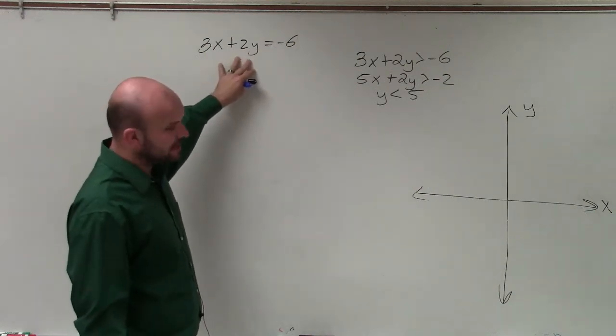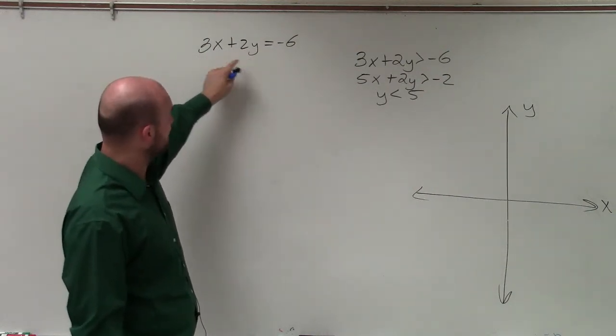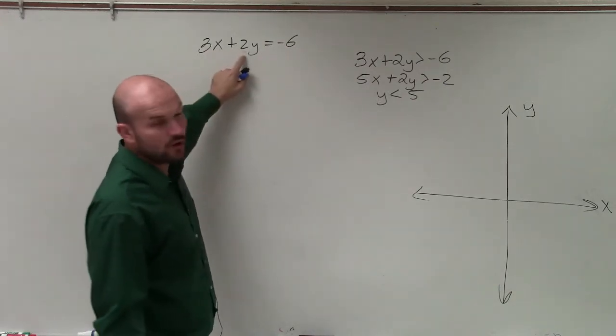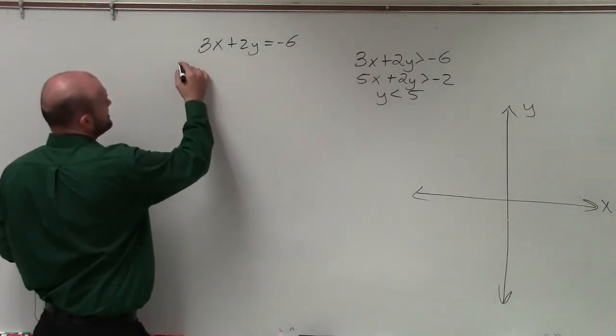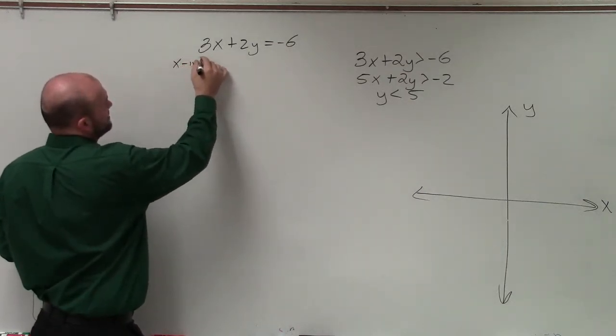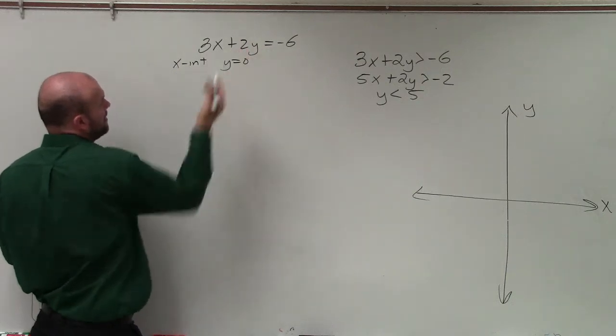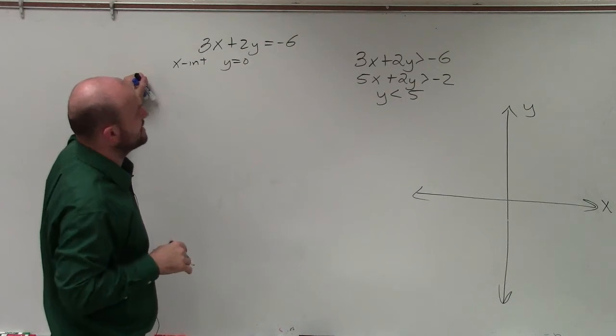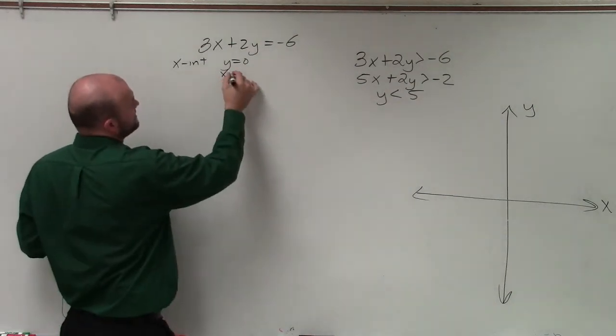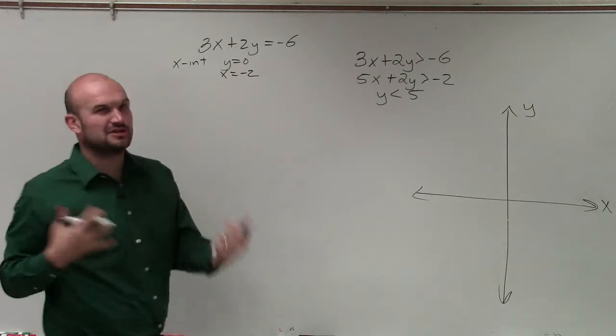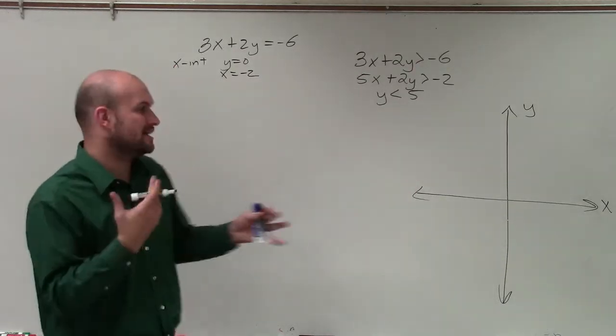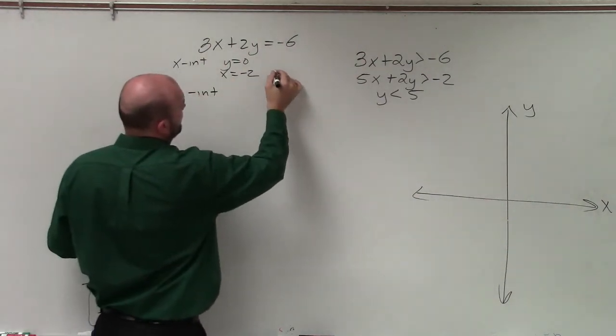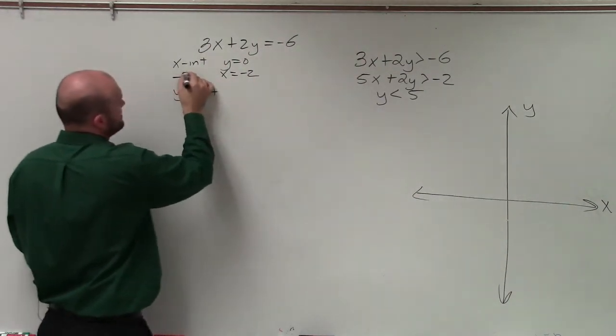Now, when graphing an inequality that's in standard form, as long as my two coefficients of x and y are divisible by 6, then I like to use standard form. Standard form basically just says I can find the x-intercept by plugging y in for 0. So I'm going to do this kind of in my head here. 2 times 0 is 0. So I have 3x equals negative 6. That means x equals negative 2. Let's write this as a point. Then the point here is my x-intercept is negative 2 comma 0.